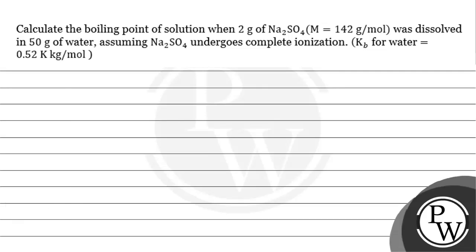Let's read this question. Calculate the boiling point of solution when 2g of sodium sulfate was dissolved in 50g of water, assuming Na₂SO₄ undergoes complete ionization. Kb for water is 0.52 kg per mole. The key concept for this question is elevation in boiling point.